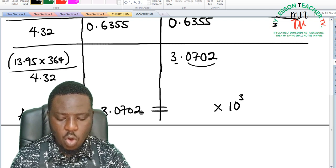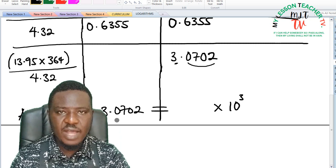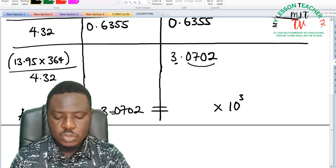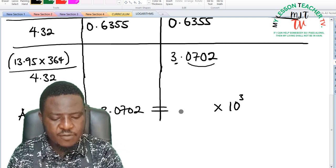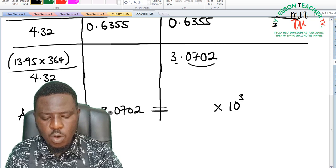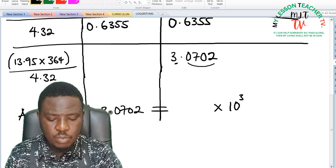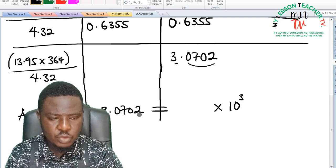Otherwise you can still use the log reading table and look for the values that will give you 0702. So for us to get the value of a in standard form we are going to look for using the anti-log table, we are going to look for 0.07 under 0 difference 2.